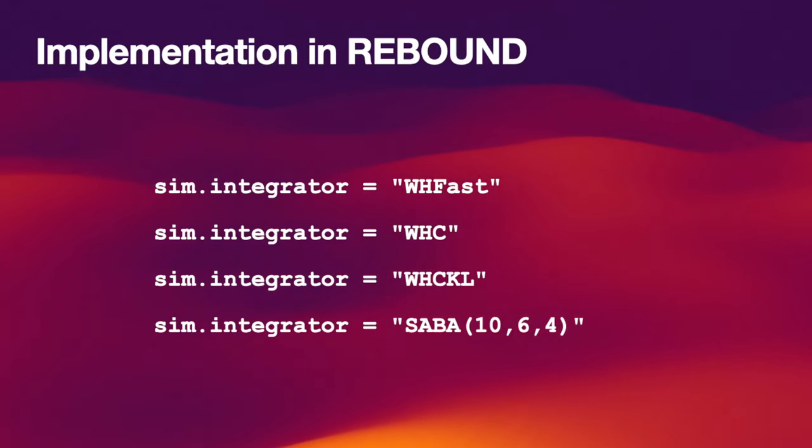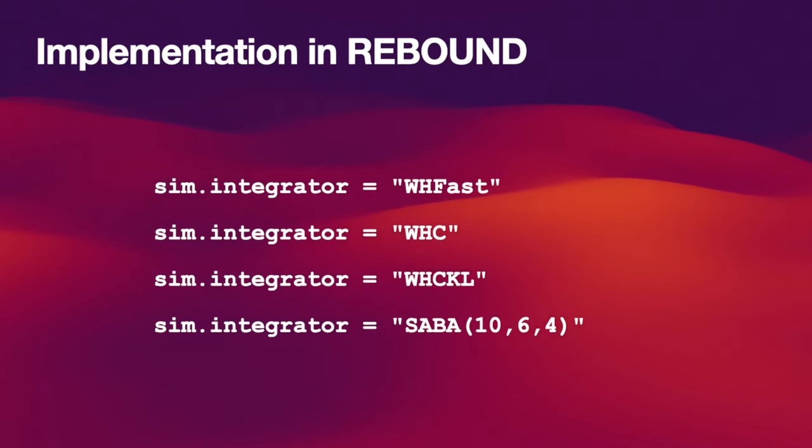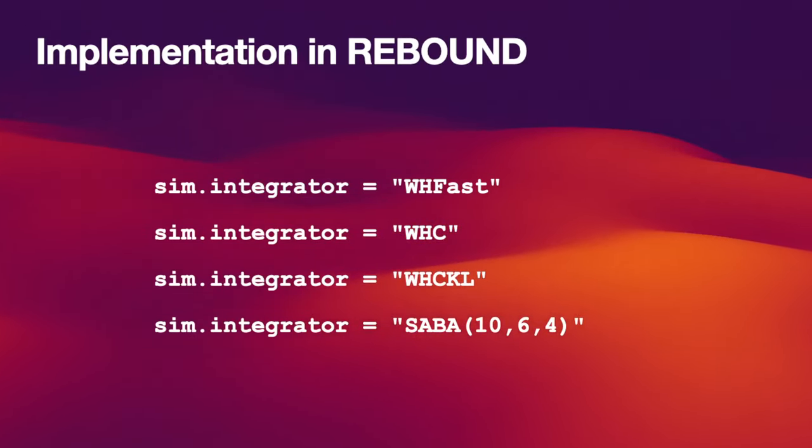All you have to do is say sim.integrator and then tell rebound which integrator you want to use. Everything else is done for you in the background. So if you're currently using WHFAST, by all means try out WHC, which turns on the symplectic correctors, or try out WHCKL, which turns on the symplectic correctors and the lazy kernel method, or the same goes for all the Saba methods.